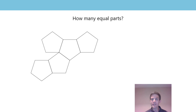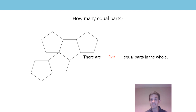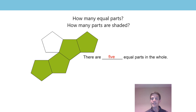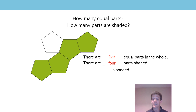Here's our next problem. Now this is a bit more of an unusual shape that we've put together. How many equal parts are there? There are five equal parts in the whole — let's say that together: there are five equal parts in the whole. And I'm going to shade some in. How many parts are shaded? There are four parts shaded. So we can say now that four-fifths is shaded. Let's say that together: four-fifths is shaded.